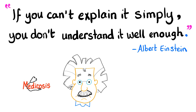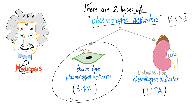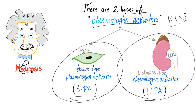If you can't explain it simply, you don't understand it well enough. So let's use the KISS principle — keep it simple. There are two types of plasminogen activators: tissue-type plasminogen activator, TPA, and urokinase-type plasminogen activator, UPA. Now we're focusing on TPA.